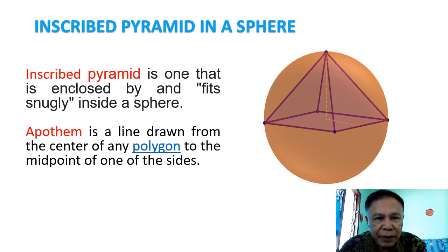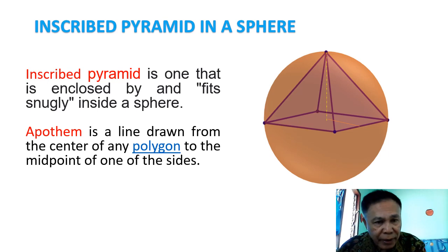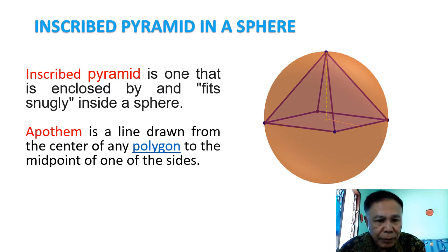An inscribed pyramid is one that is enclosed inside a sphere. There is a line drawn from the center of any polygon up to the midpoint of the sides — it is called the apothem. In this way, a pyramid is inside or enclosed in a sphere.